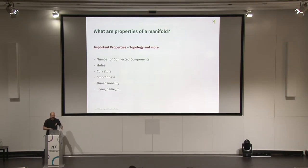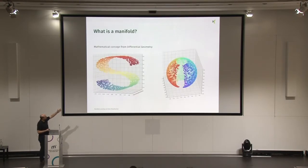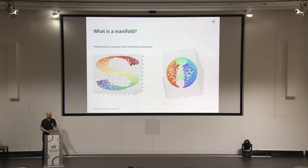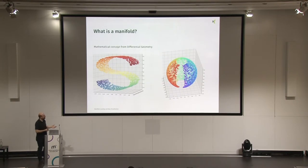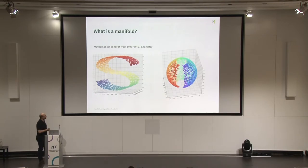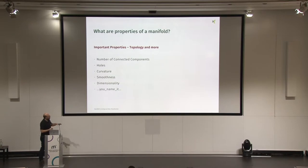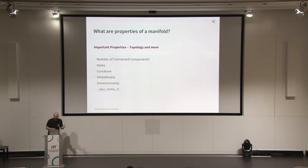Smoothness is important, and dimensionality — that's something very important for anyone working with data. Typically we have some kind of feature space and the data is embedded in it. When you want to describe this S, for example, it's in a three-dimensional space, but it's essentially not a three-dimensional object — just a two-dimensional shape. So the dimensionality of the data would be two, the dimensionality of the space is three, but we can probably represent this in a two-dimensional space without losing too much information.